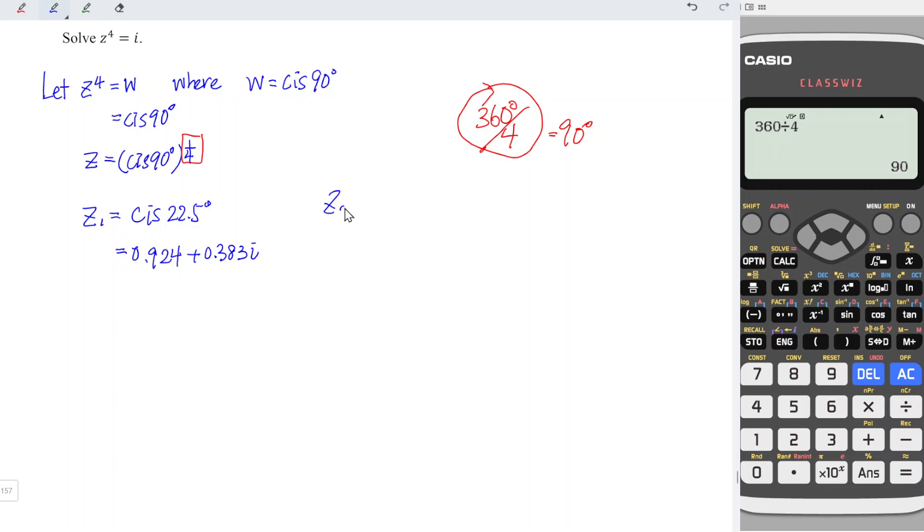So we should have z2 is equal to cis, since the gap is 90 degrees, which means that we should take 22.5 plus 90 degrees to obtain the degree for the second root, which is 112.5 degrees. Therefore, the rectangular form of this root is equal to cos 112.5 for the real part, which is negative 0.383. And for the imaginary part, we take sine 112.5, and this is equal to positive 0.924i.